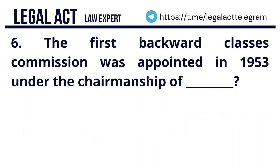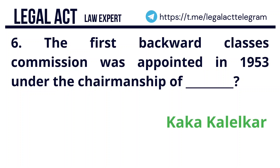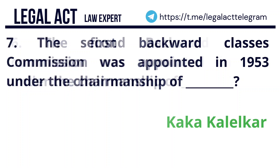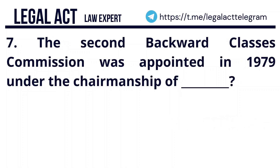Question 6: The first Backward Classes Commission was appointed in 1953 under the chairmanship of? The answer is Kaka Kalelkar. Question 7: The second Backward Classes Commission was appointed in 1979 under the chairmanship of? The answer is B.P. Mandal.